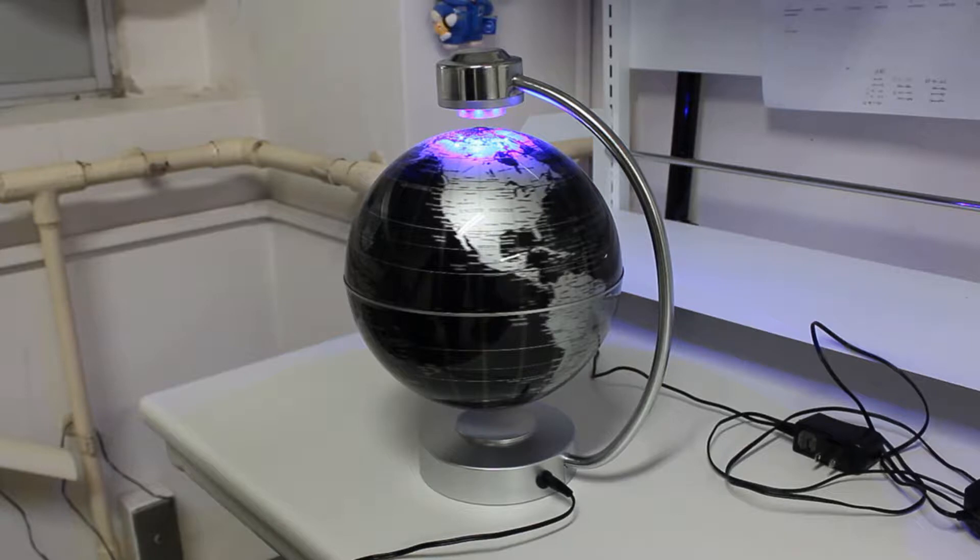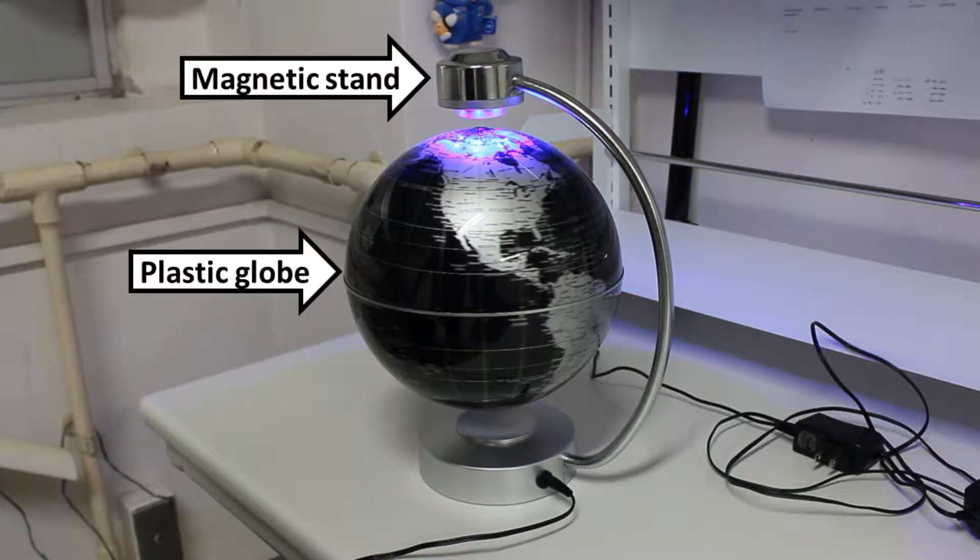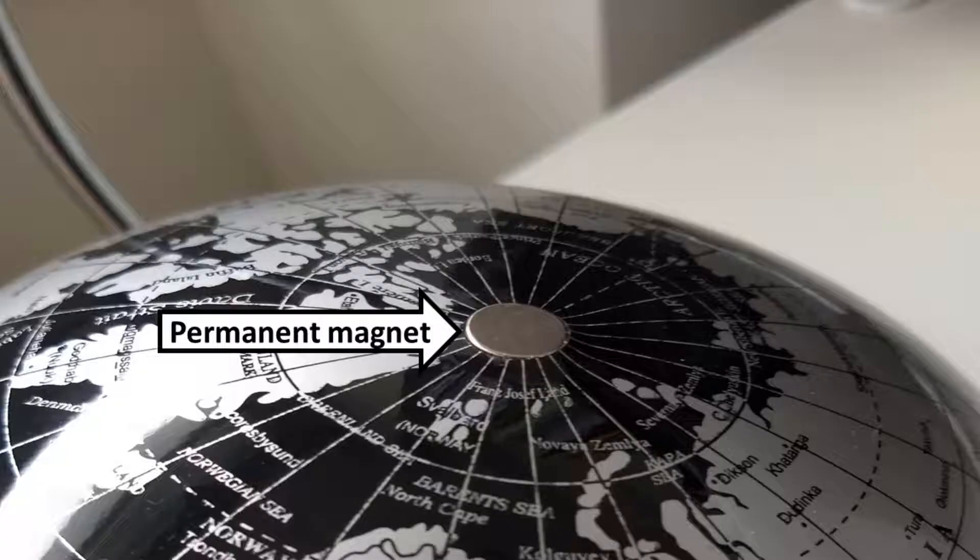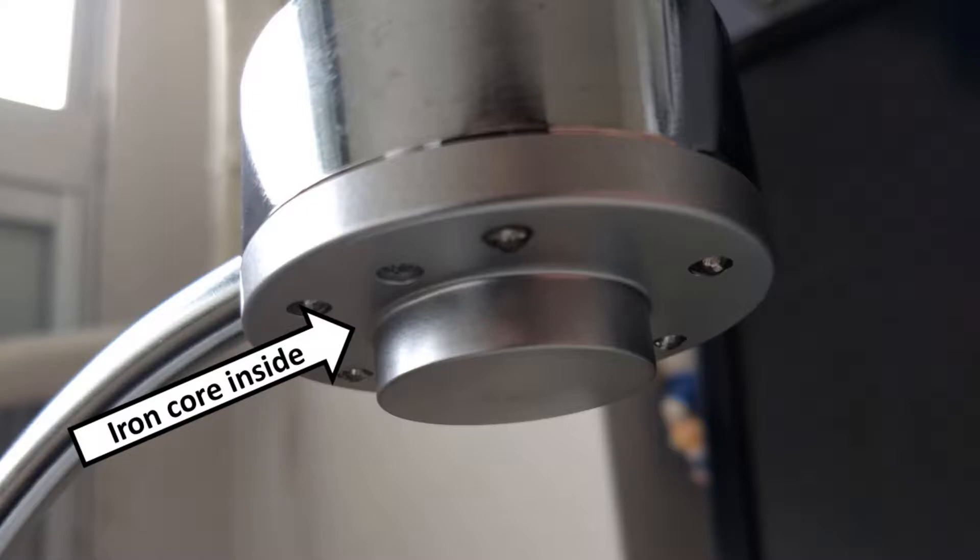This is today's experimental setup. It contains this plastic globe and this vertical magnetic stand. There is a permanent magnet in the upper part of this globe and an iron core in the magnetic stand.